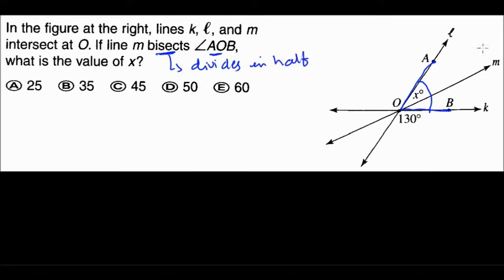So line M bisects angle AOB in half. So this, well, you have, you know that half of this angle is X. Like over here they say this is X. So the other half, this one, also needs to be X. So you have these two angles that are equal to X and you need to find the value of X.